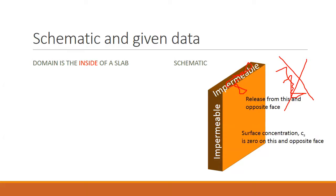And the surface concentration c_s is zero on this and opposite face. Initial concentration c_i in the slab is given.